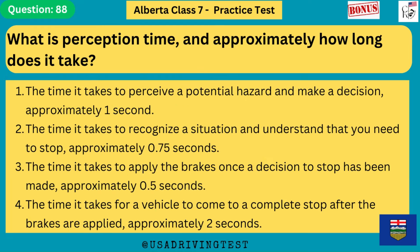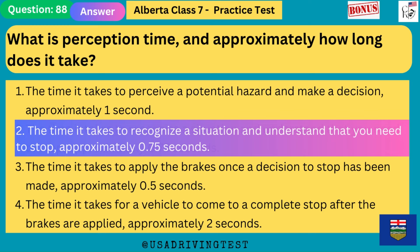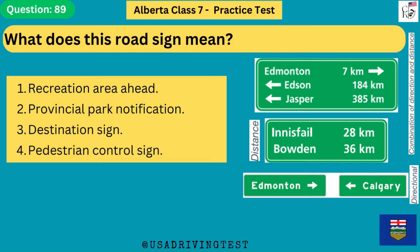What is perception time, and approximately how long does it take? 1. The time it takes to perceive a potential hazard and make a decision, approximately 1 second. 2. The time it takes to recognize a situation and understand that you need to stop, approximately 0.75 seconds. 3. The time it takes to apply the brakes once a decision to stop has been made, approximately half a second. 4. The time it takes for a vehicle to come to a complete stop after the brakes are applied, approximately 2 seconds. The answer is 2: approximately 0.75 seconds.